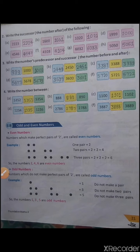Look at question number 4: write the number between. In this question, the successor and predecessor of a number are already given and we have to find out that number. In question A, the predecessor is 5352 and the successor is 5354, so the number is 5353.